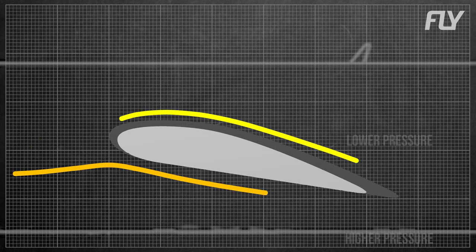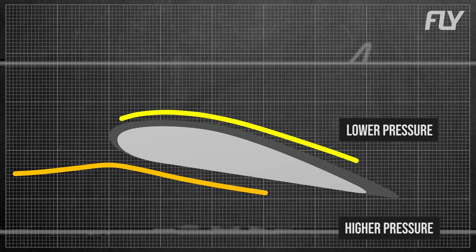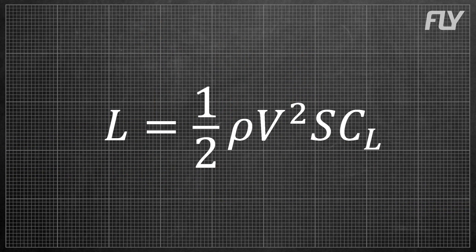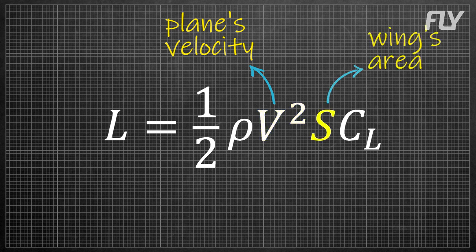A wing provides lift, or upward force, to the aircraft. The amount of lift that a wing can produce is generally calculated using this equation. V is the velocity of the plane relative to the air, S is the area of the wing, and CL is the lift coefficient, which generally gets bigger as the wing's camber or angle of attack increases.